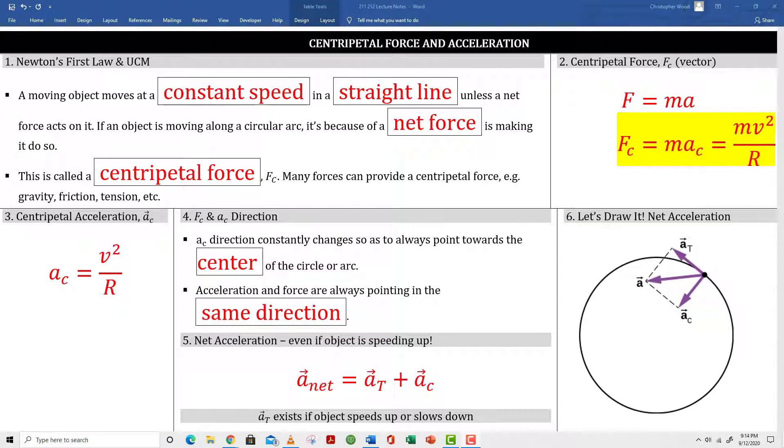Last section, centripetal force and acceleration. Box 1, Newton's first law says a moving object moves at a constant speed in a straight line, unless a net force acts on it. So, if an object is moving along a circular arc, it's because a net force is making it do so. This force is called a centripetal force. A lot of different forces can function like a centripetal force. For example, gravity, friction, tension, and the list goes on. Box 2, the centripetal force obeys Newton's second law. So, we start with F equals MA and add a subscript C for centripetal. Centripetal means center seeking. We know the expression for centripetal acceleration. We derive that in detail. It's V squared over R. So, centripetal force is expressed as F subscript C equals MV squared over R.